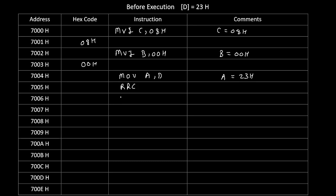Immediately after rotation we check whether a carry is generated or not by writing the instruction JNC skip. If carry is not generated, we jump ahead in the program. JNC skip is a 3-byte instruction, so it takes 3 memory locations. If carry is generated, then at 7009H we write INR B — every time carry is generated we increment B by 1. If carry is not generated, we skip that part and come to the skip address, which is 700AH. So we write 0A first, then 70.